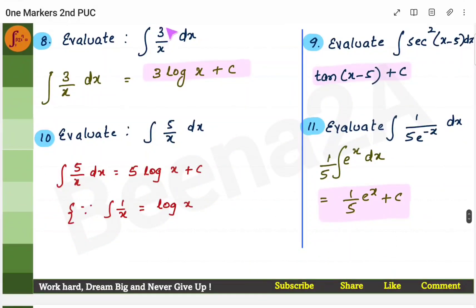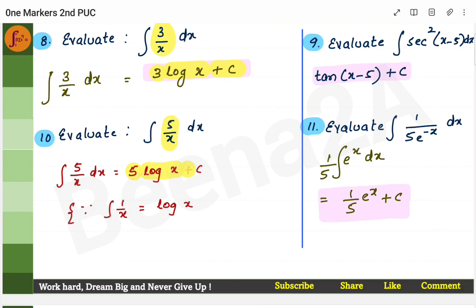Next: the integral of 3/x. Keep 3 outside. You're left with 1/x. The integral of 1/x is log x. So the answer is 3 log x + c. Similarly, the integral of 5/x: keep 5 outside, the integral of 1/x is log x, giving 5 log x + c.